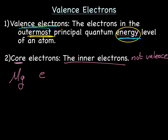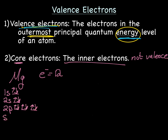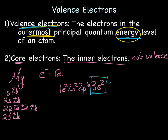Magnesium has 12 electrons. So we'll have 1s with 2 electrons, 2s with 2 electrons, 2p with a total of 6 electrons — following Hund's rule — and 3s with 2 electrons. The electron configuration is 1s², 2s², 2p⁶, 3s². The valence electrons are at the outermost energy level, which is the 3. So 3s² are the valence electrons, meaning magnesium has a total of 2 valence electrons.